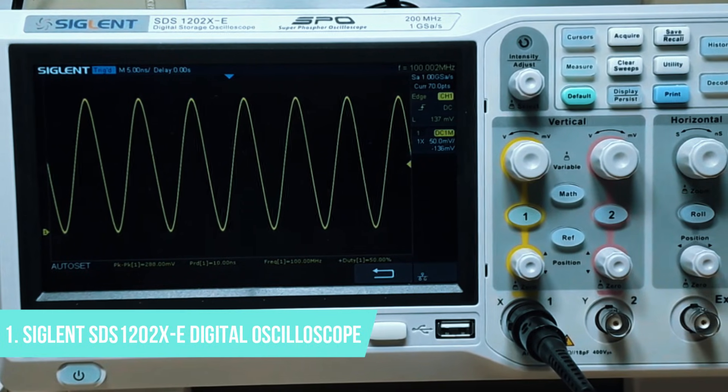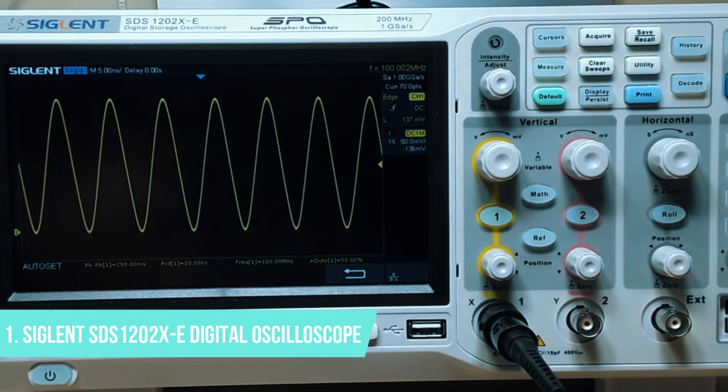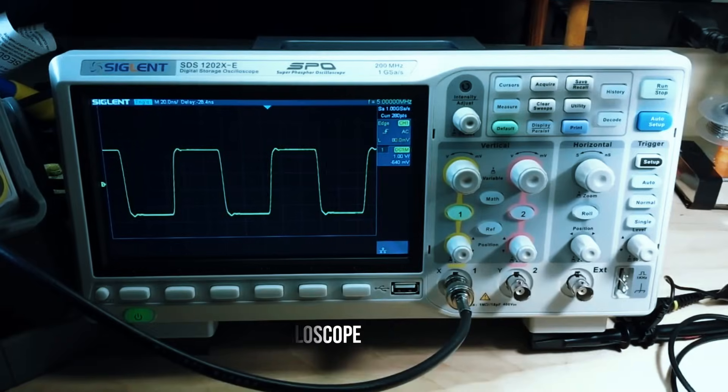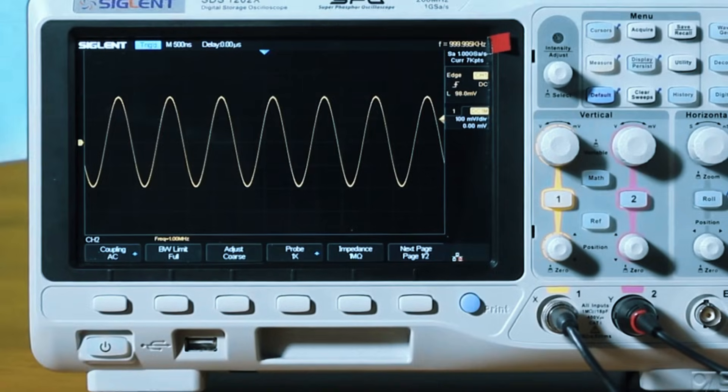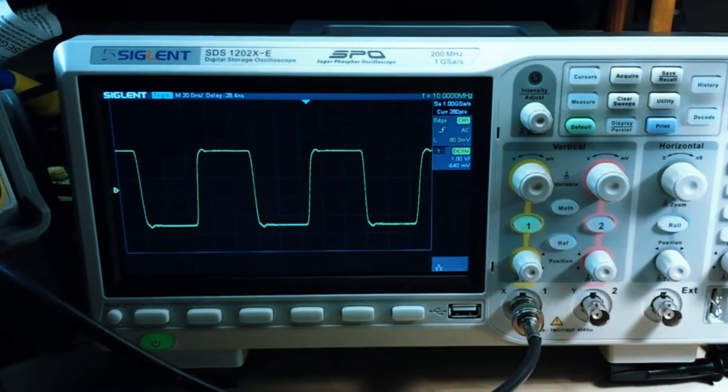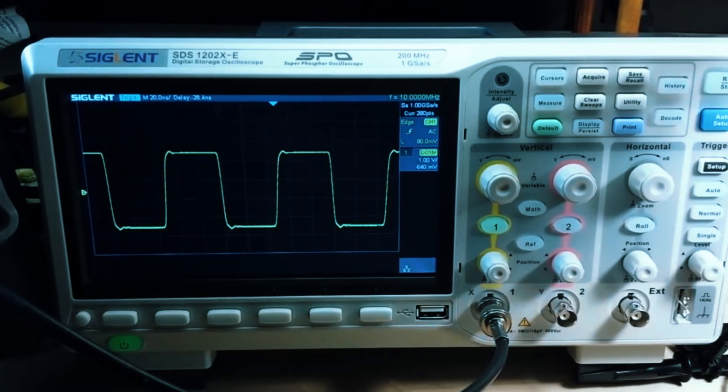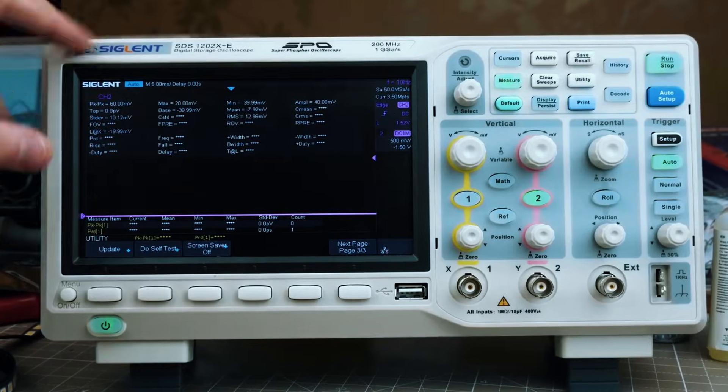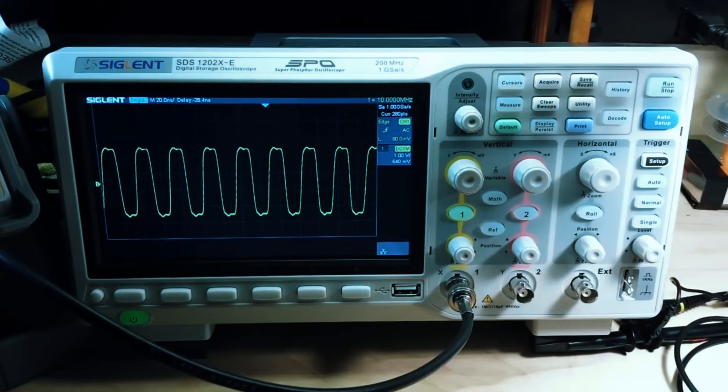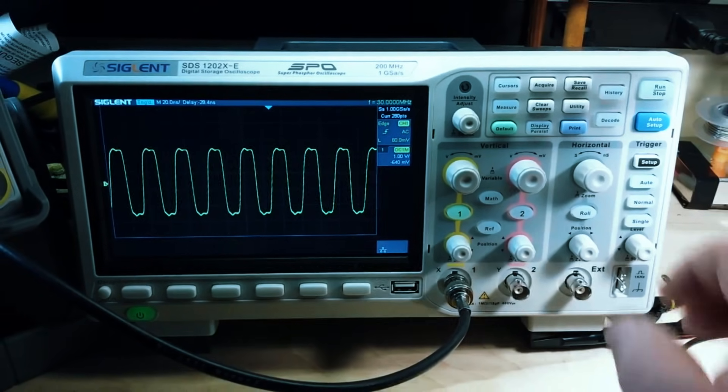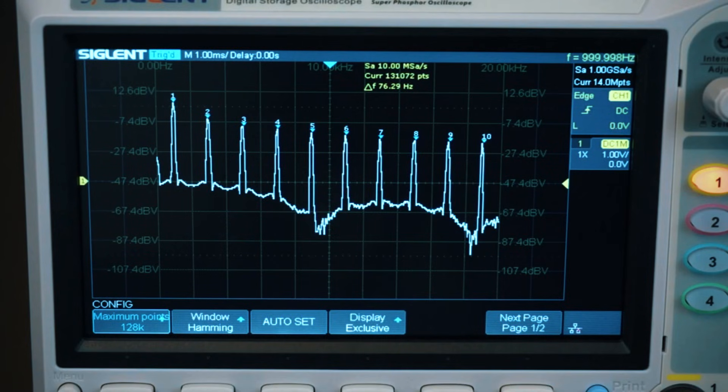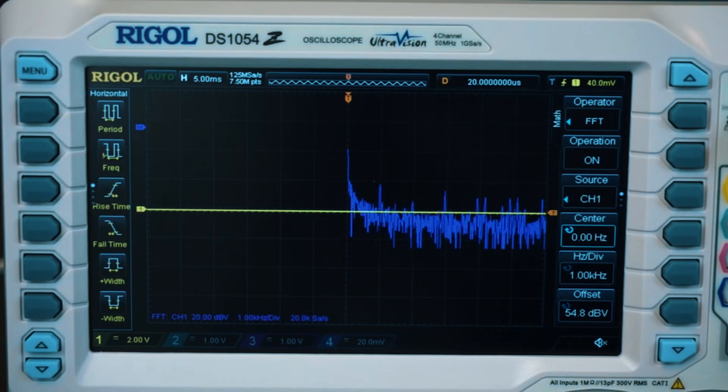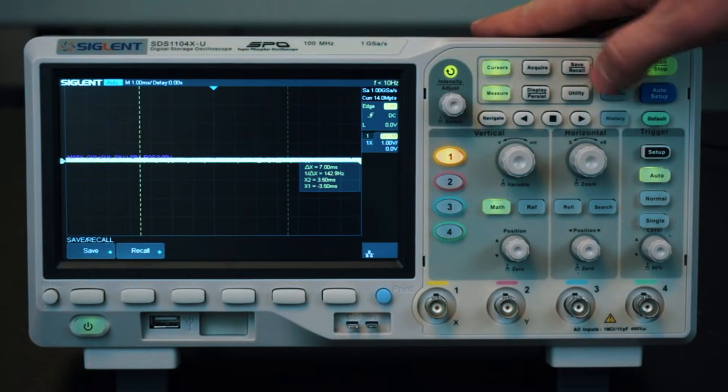Number 1: Siglent SDS-1202XE Digital Oscilloscope, Best Overall Pick in 2025. And finally, taking the number 1 spot is the Siglent SDS-1202XE, arguably the best overall oscilloscope for professionals and enthusiasts in 2025. This model checks all the boxes, delivering high-end features, a smooth user experience, and an unbeatable price-to-performance ratio. Whether you're a seasoned engineer, an electronics hobbyist, or a repair technician, this oscilloscope offers the best combination of accuracy, speed, and versatility, all at a price that won't empty your budget.